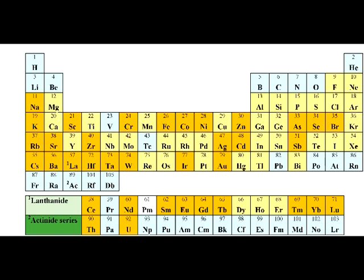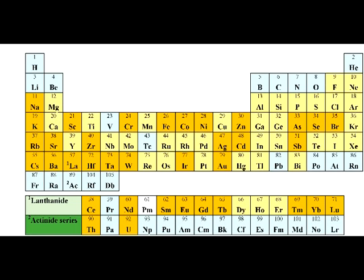What. How. Do. We. Create. Electron. Configurations. Elements are grouped by the atomic number which tells us the number of electrons. Electron configurations are written in order following this table from the bottom up.